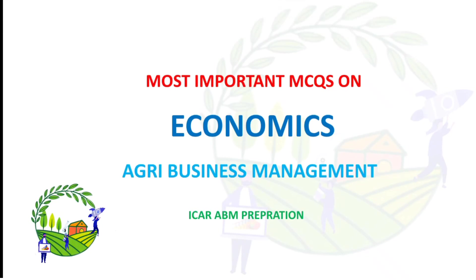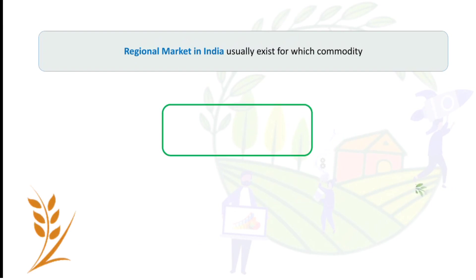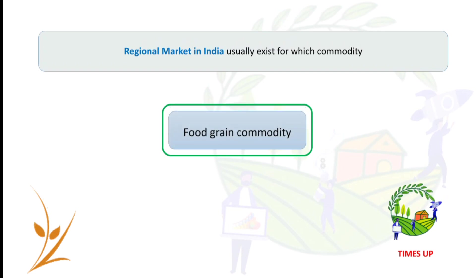Hi everyone, in this video we are going to discuss the most important objectives on economics. Regional market in India usually exists for which commodity? The answer is food grain commodity.